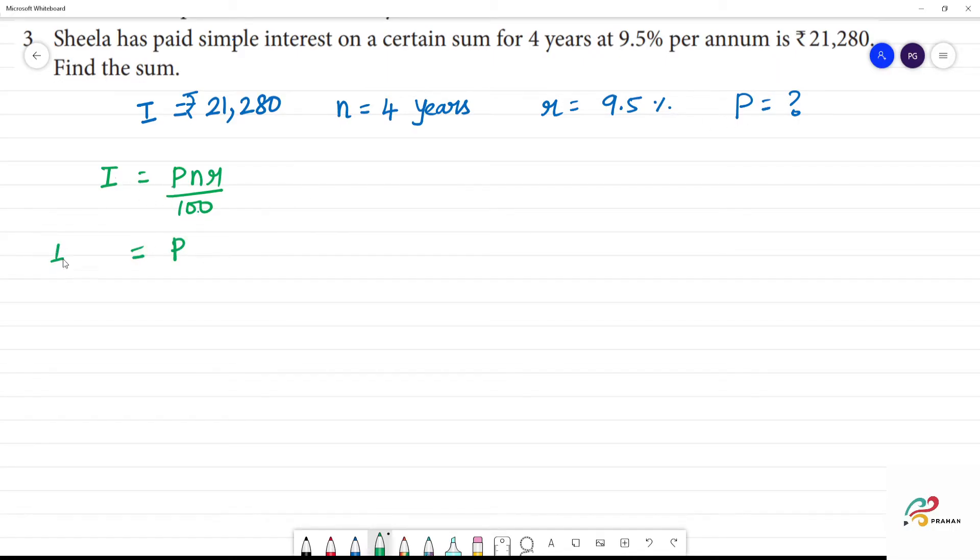P equals I times 100 divided by N times R. Now we need to substitute, which is equal to I is 21,280 into 100 divided by N is 4 into R is 9.5.